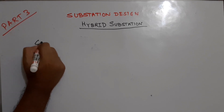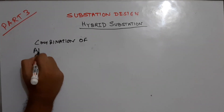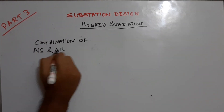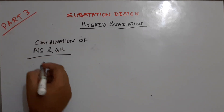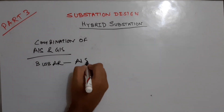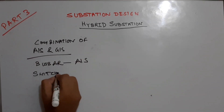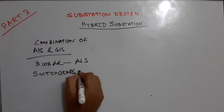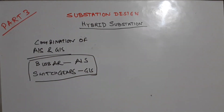In a hybrid substation, the bus bar arrangement is AIS — air insulated — and the switchgear arrangement is GIS — gas insulated. So the combination of an air insulated bus bar with gas insulated switchgear is what forms a hybrid substation.